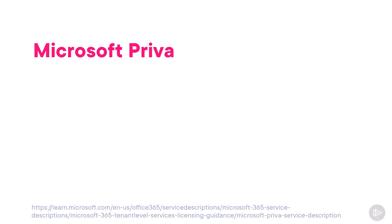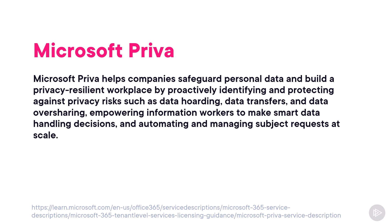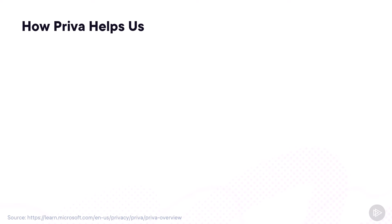Let's start with a definition by Microsoft. Microsoft Priva helps companies safeguard personal data and build a privacy-resilient workplace by proactively identifying and protecting against privacy risks such as data hoarding, data transfers, and data oversharing, empowering information workers to make smart data-handling decisions, and automating and managing subject requests at scale. Priva wants us to build a privacy-by-default organization.